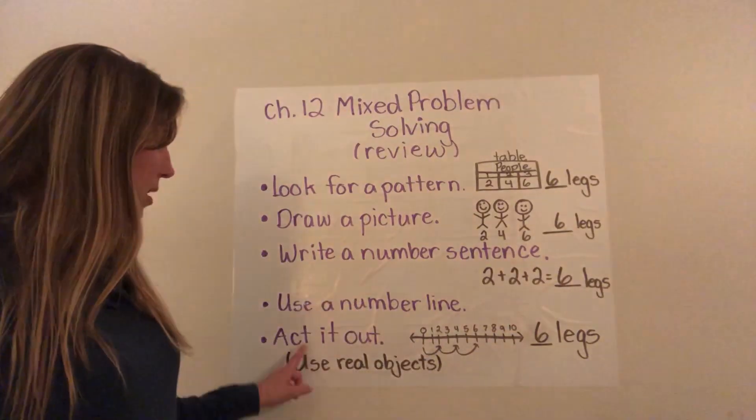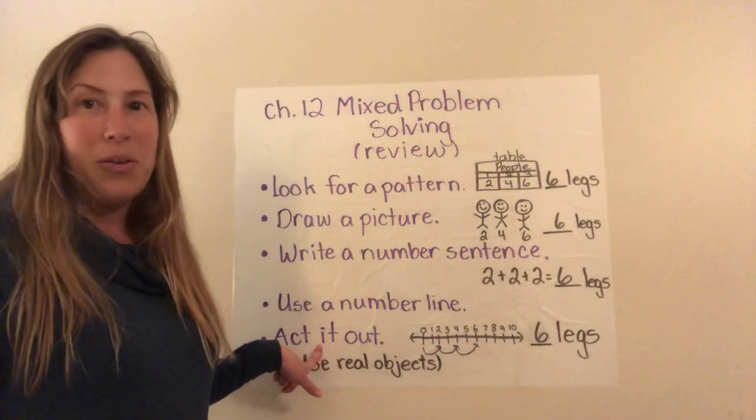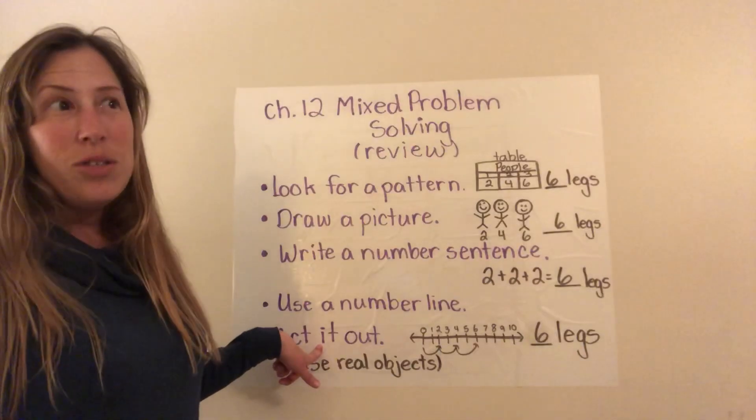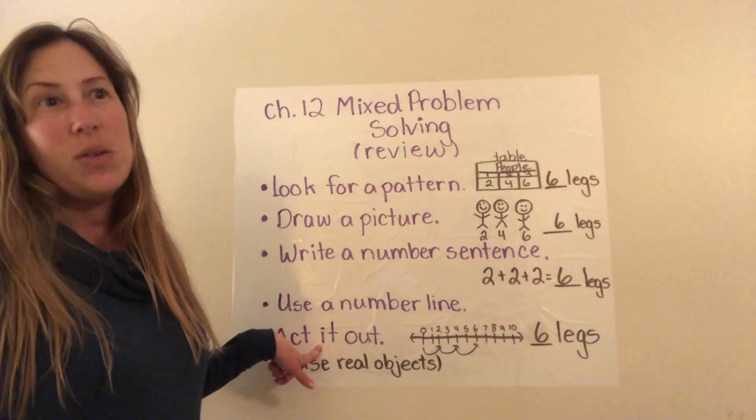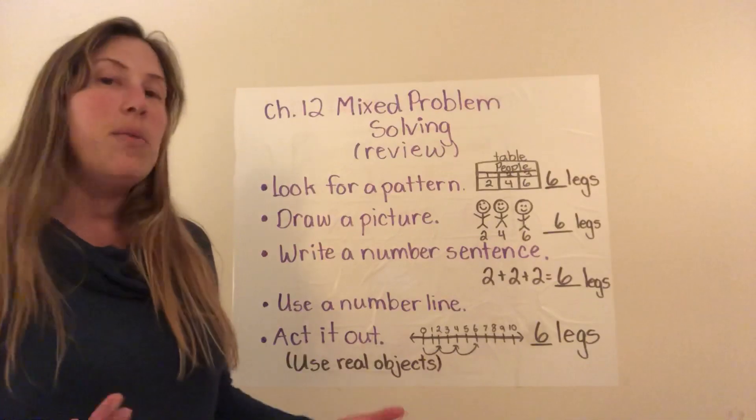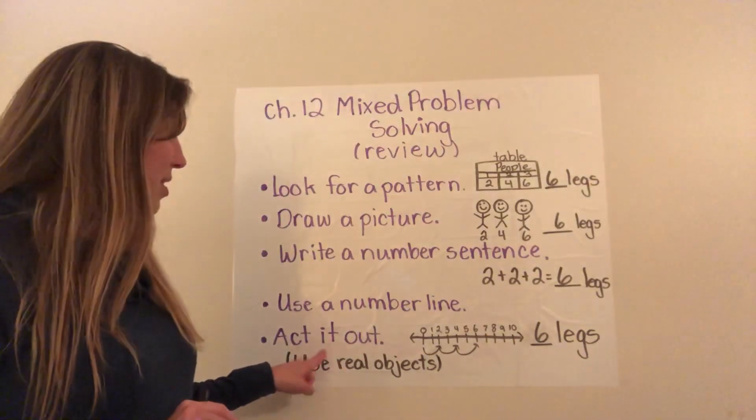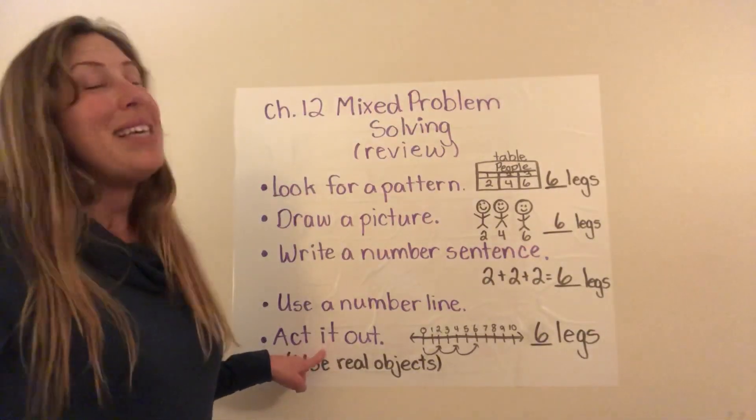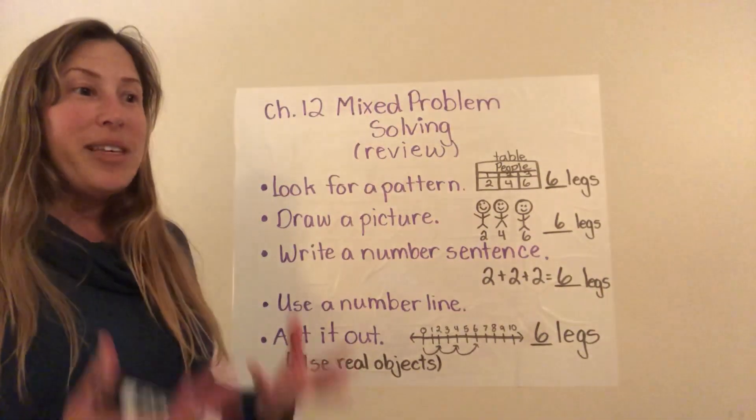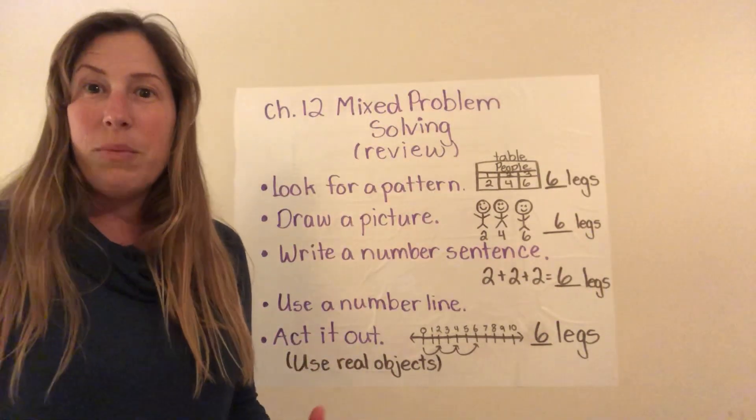And then finally, the acted-out model. This one is harder to do when we're in the classroom because you don't have objects right around you to act it out with. But now that you're at home, you can actually use this strategy pretty easily. This is where you actually get objects from around your home and you try to solve the problem with the real objects.